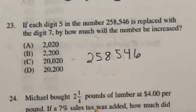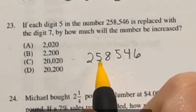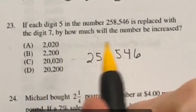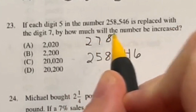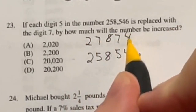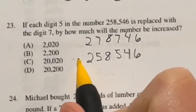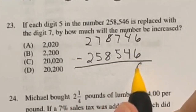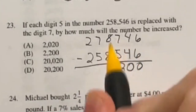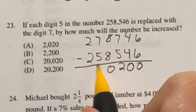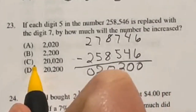For number 23, we take the original number and replace each of the 5s with the number 7. We rewrite the number with 7s instead of 5s, then find how much it increased by subtracting the two. The subtraction gives 0s in most places, and a 7 minus 5 equals 2 in the relevant digit positions, resulting in a difference of $20,200, which is option D.